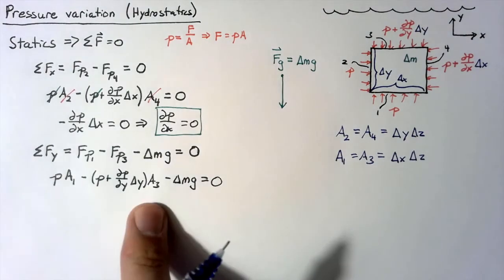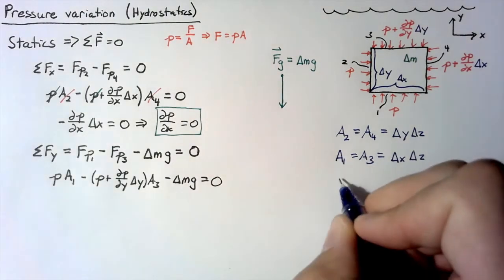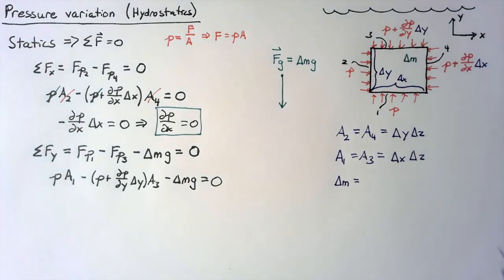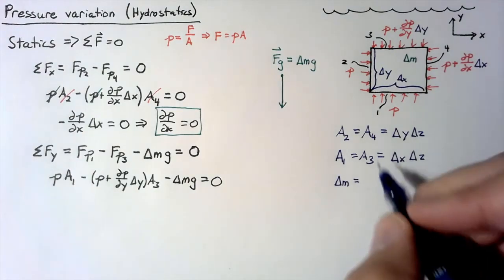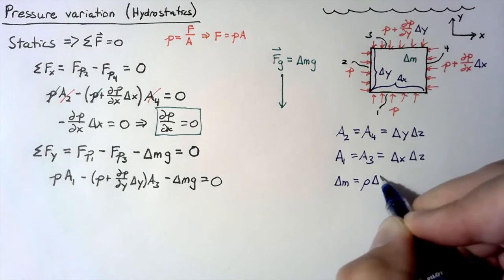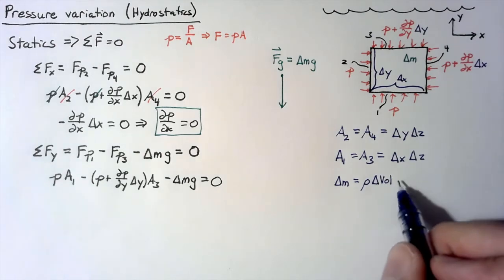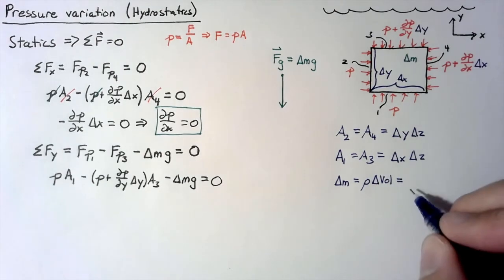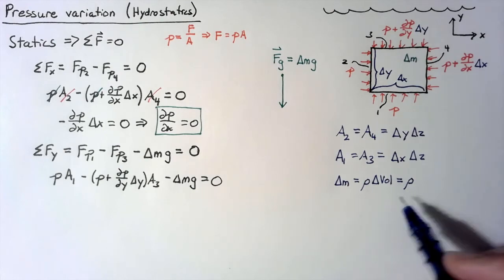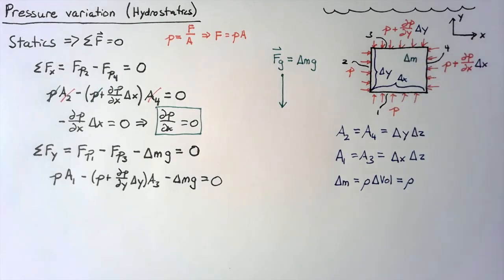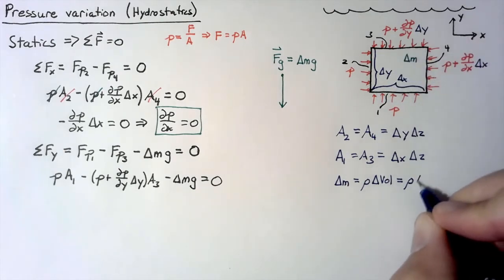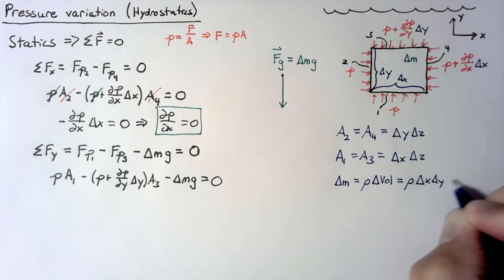All right, so we have a1 and a3 defined. Well, let's spend a moment to define this delta m. Mass is simply equal to density multiplied by volume, which is going to be equal to density multiplied by the three lengths multiplied together to get the volume of the box: delta x, delta y, delta z.